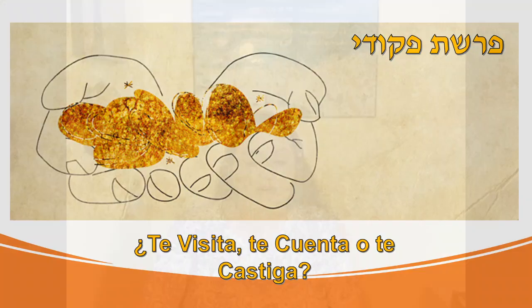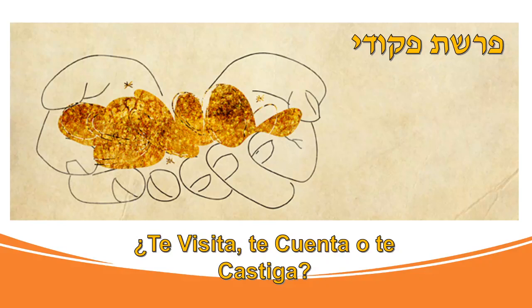Shalom a todos hermanos y bienvenidos a nuestra última porción del Sefer Shemot, la última del libro de Éxodo. A nuestra próxima porción nos toca ya Vayikra. Es increíble, pero realmente el tiempo vuela. La clase de hoy es Pará PQD. Acuérdense que, como les dije en la clase pasada, esta se lee generalmente junto con Vayakhel, Vayakhel-PQD, pero este año se lee separada porque tenemos 13 meses en el año.